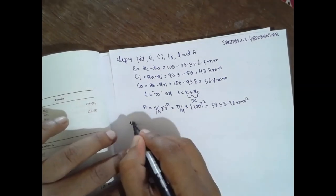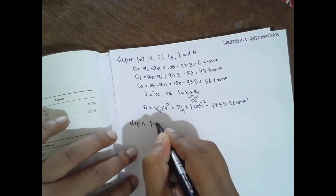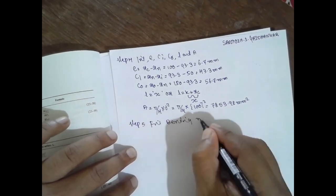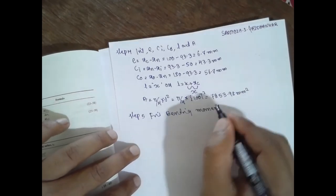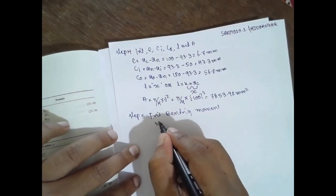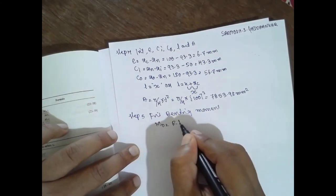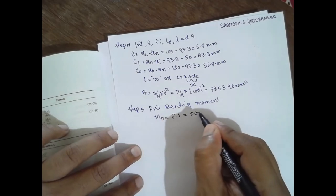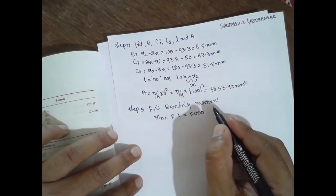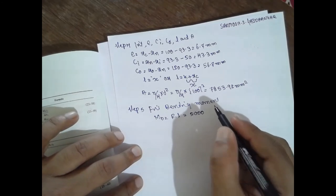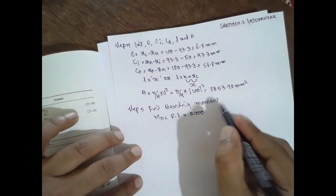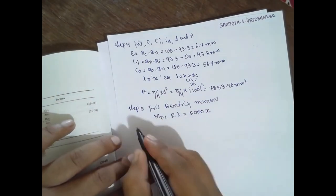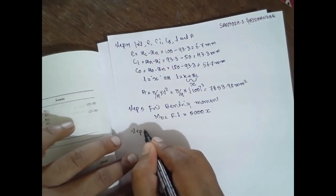Next step, find the bending moment. Finding bending moment: mb is equal to f into l. What is f? 5000 is given in the diagram. 5000, that is 5 kilonewton. What is l? It is nothing but x.